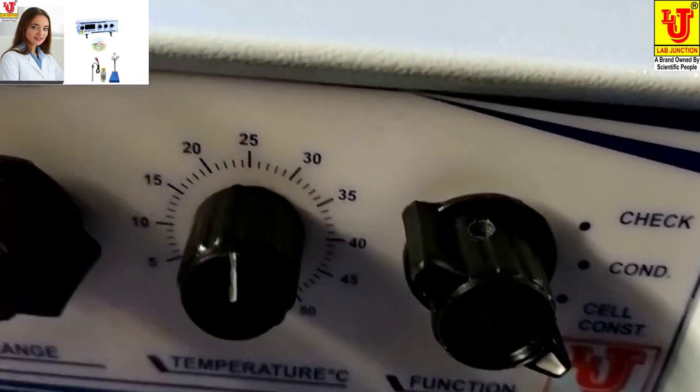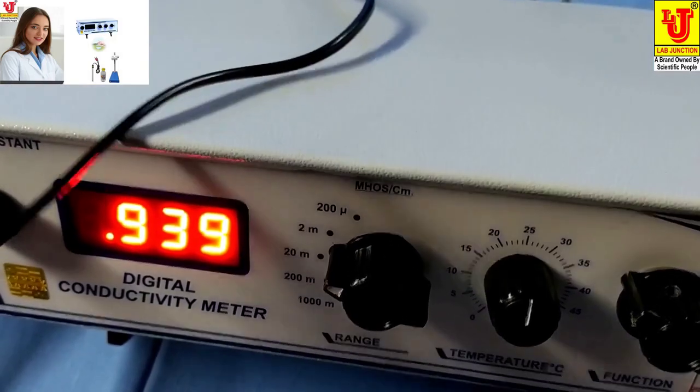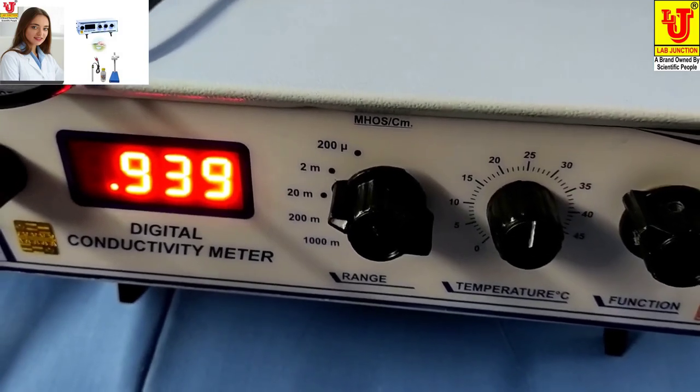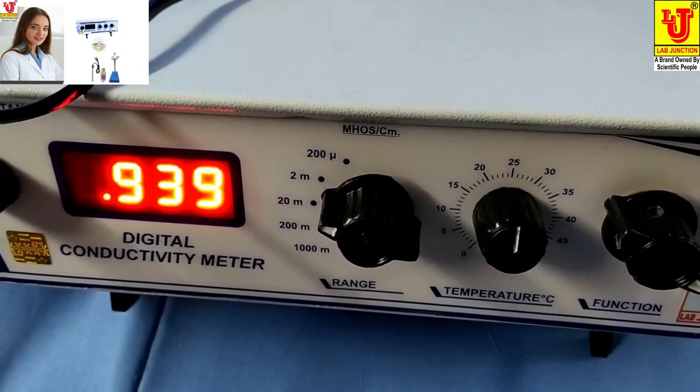Your cell constant is now, suppose, 939. You can note it on your notebook.